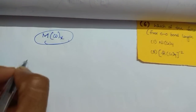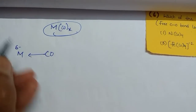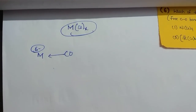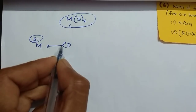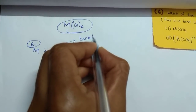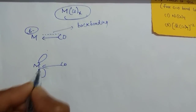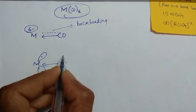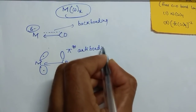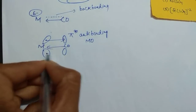CO is a ligand — it donates electrons to the metal. When electron density on the metal increases, the metal wants to decrease that electron density to increase its stability. So whatever electrons were donated by CO, the metal tries to donate them back. This is called back bonding, where the metal donates electrons back to the π* (antibonding) orbital of CO.